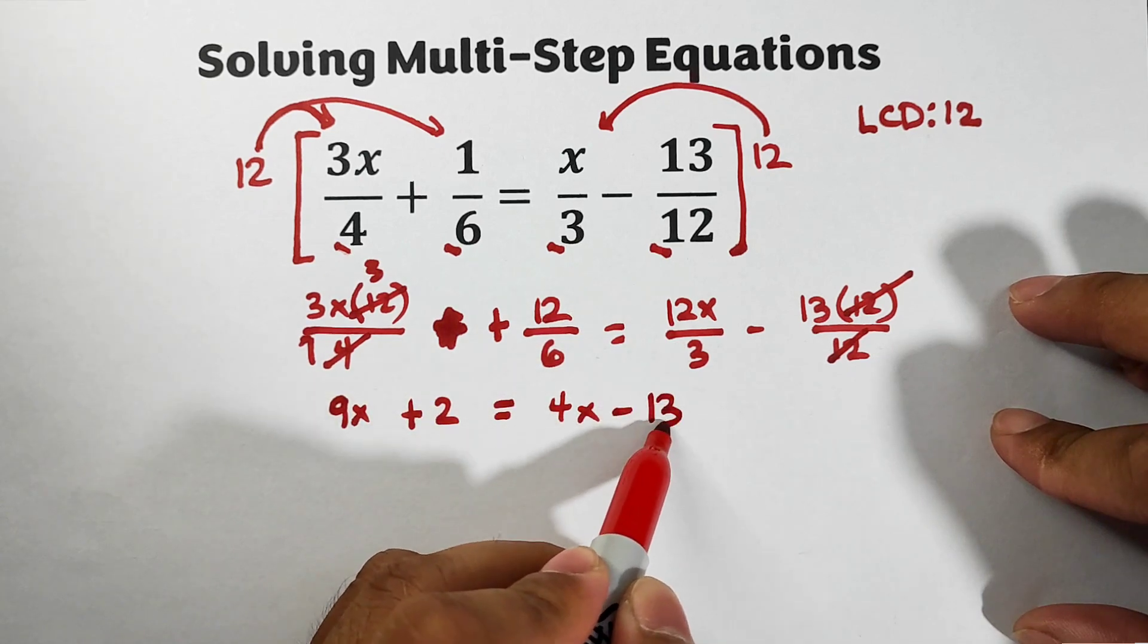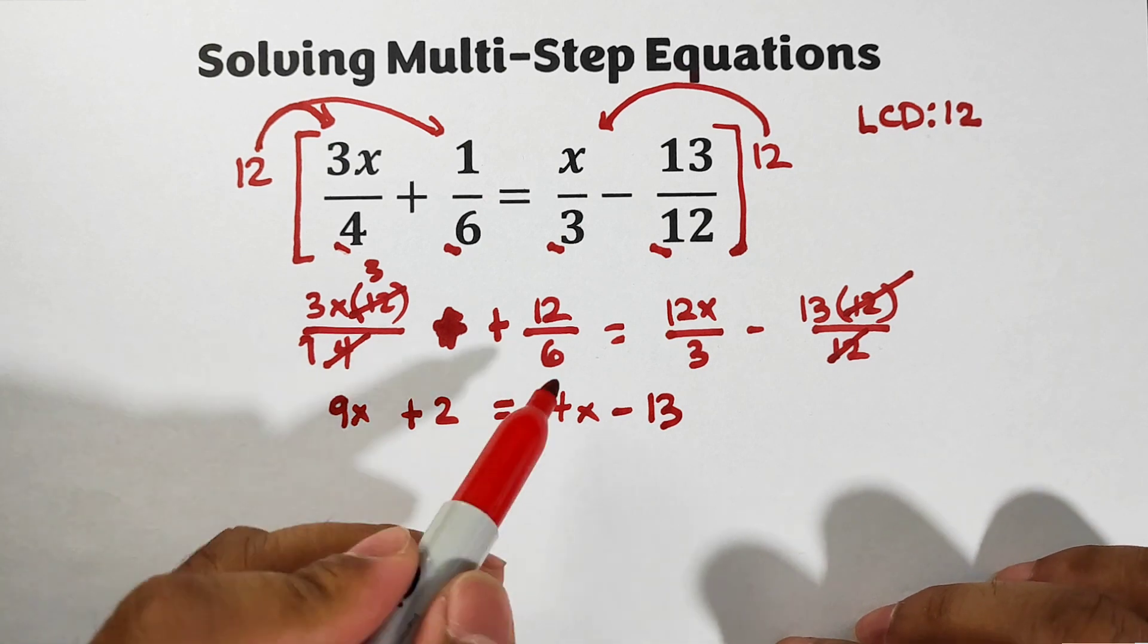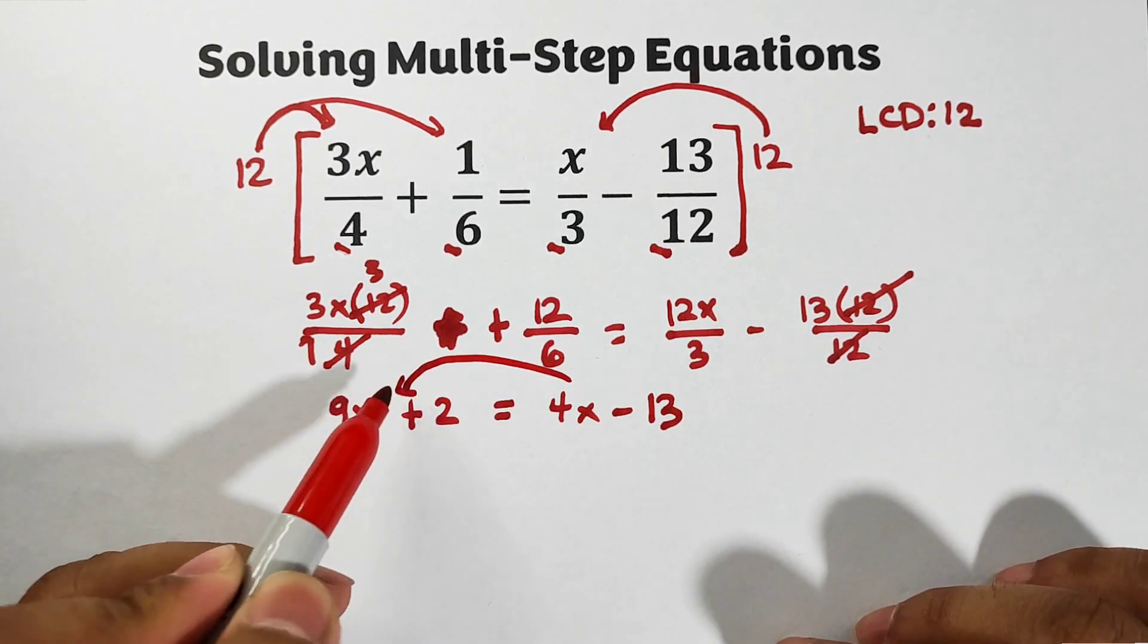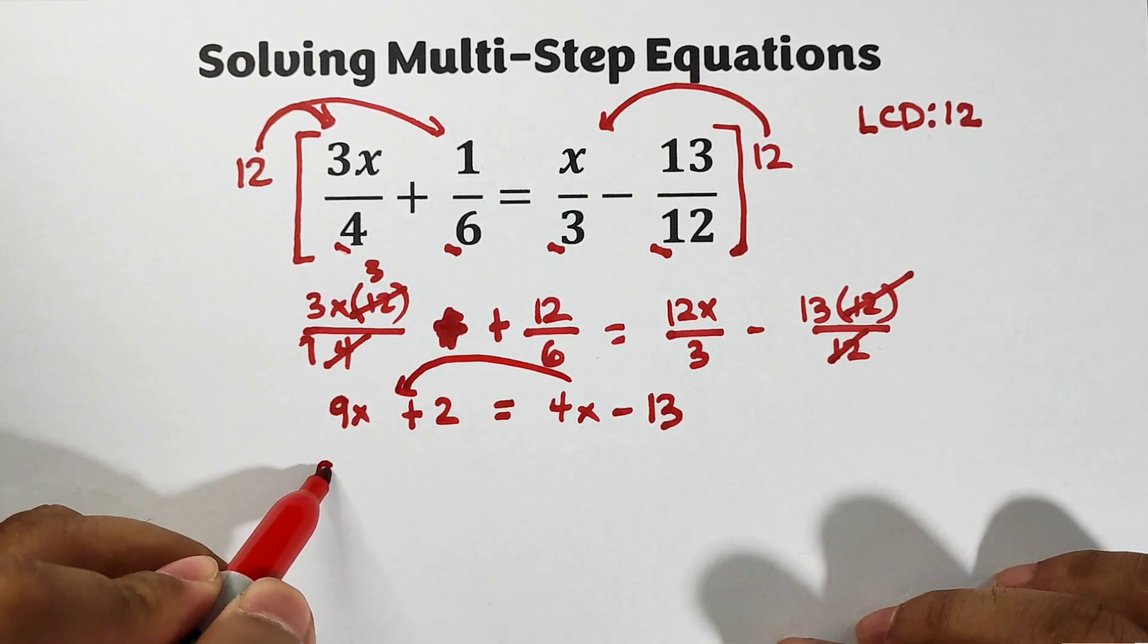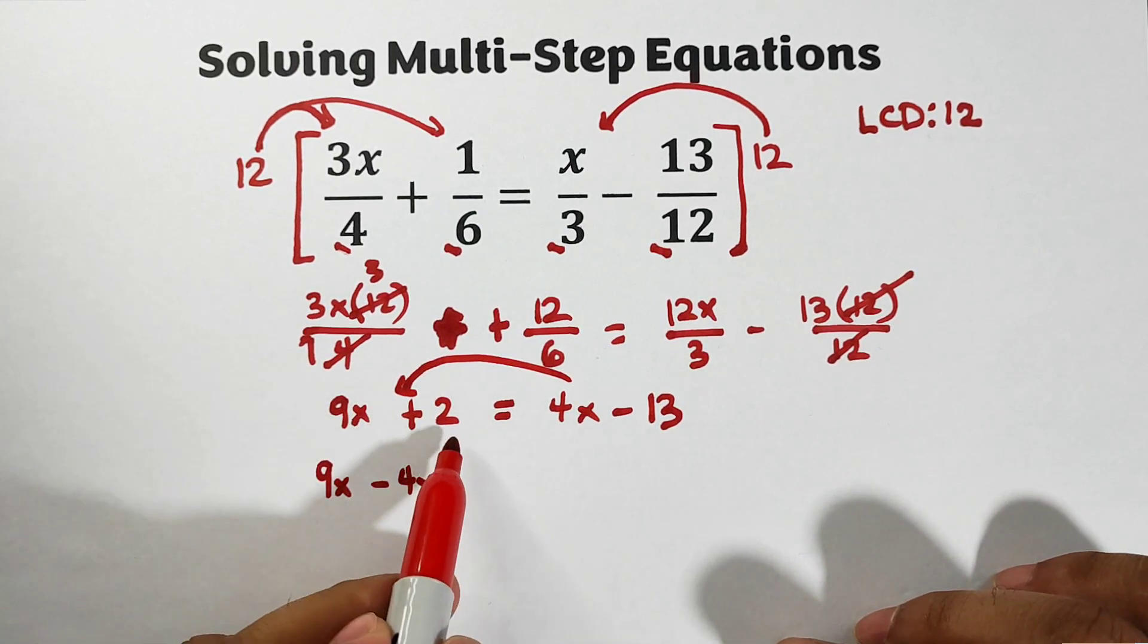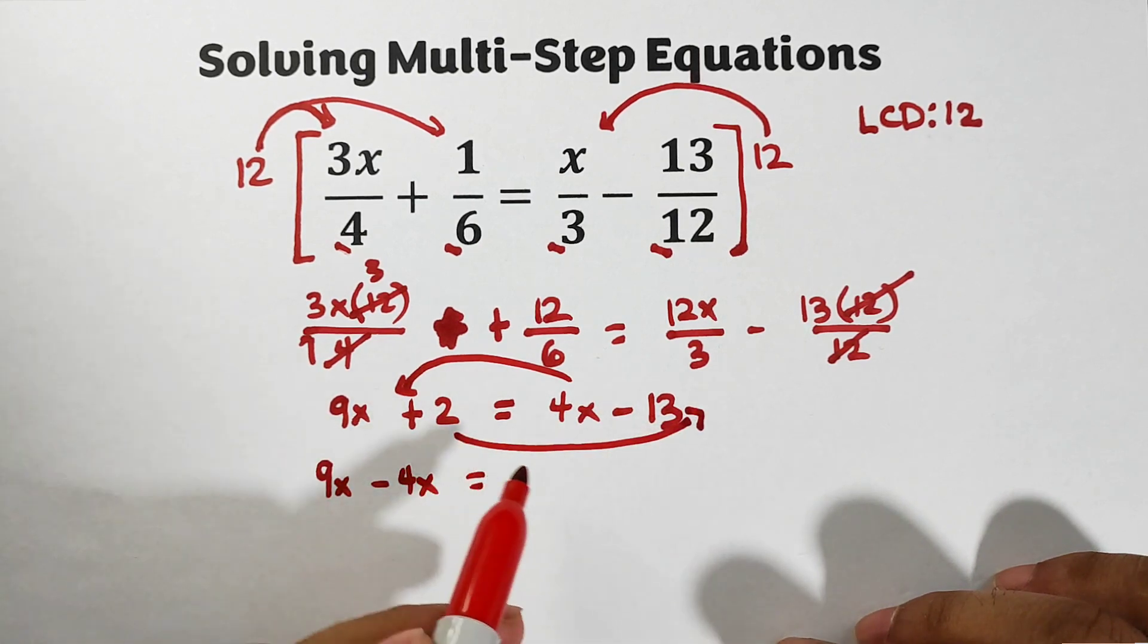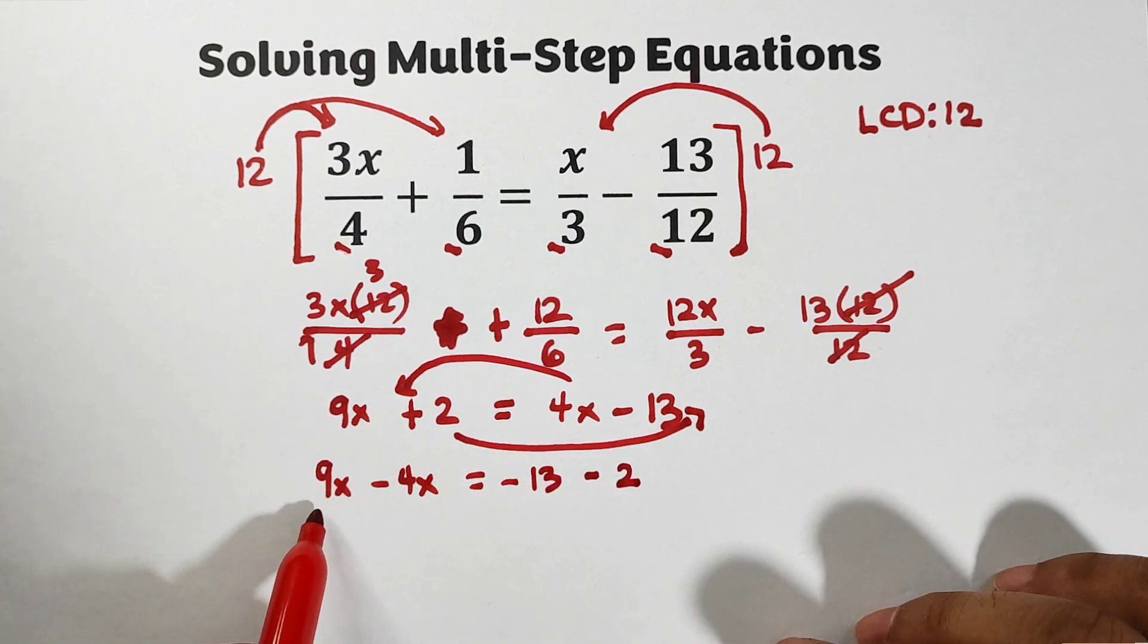Now let's do it step by step. Transpose positive 4x to the other side, it will become 9x, from positive it will become negative 4x. This positive 2, transpose it to the other side, it will become negative 13 minus 2. Simplify this.